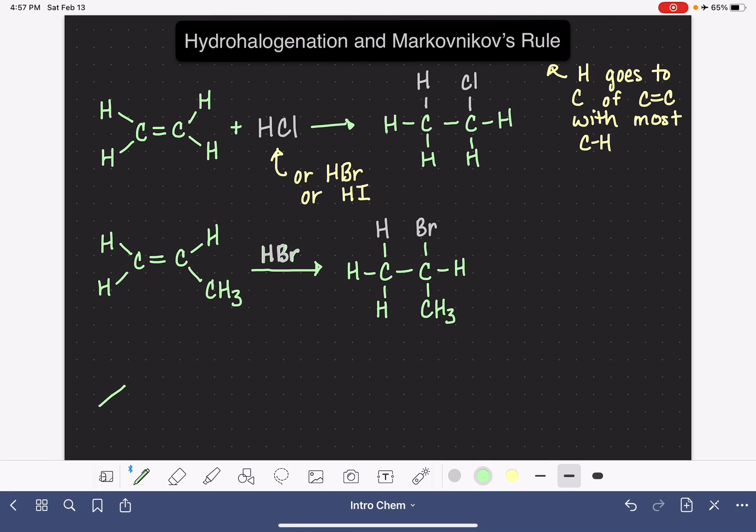Let's look at one more example, this time with line structure. Markovnikov's rule is a little bit trickier when you're using line structure because the hydrogen atoms are not visible to you. So you have to think about where the hydrogen atoms are located.